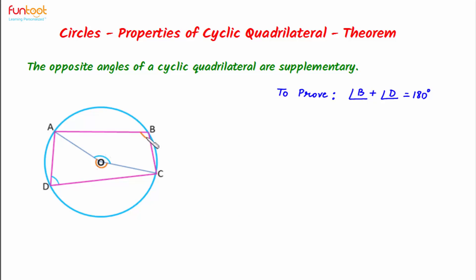For proving this, let angle B equal X and let angle D equal Y. We can see here that angle B is the angle inscribed in arc ABC. This angle will be half the angle subtended by arc ADC at the center. So if this is X, then this angle will be 2X.